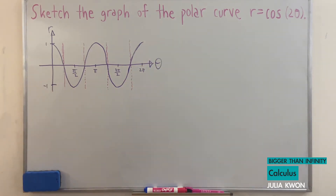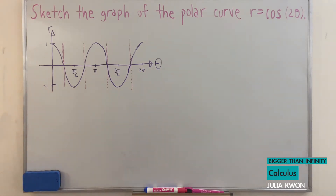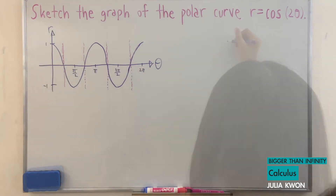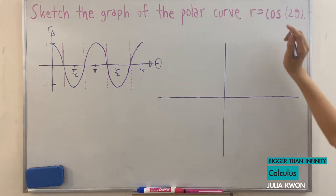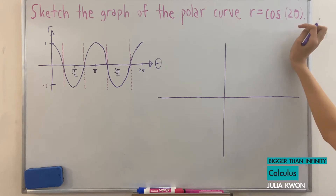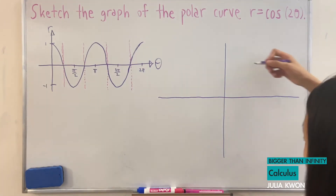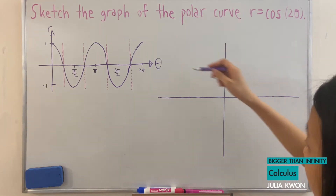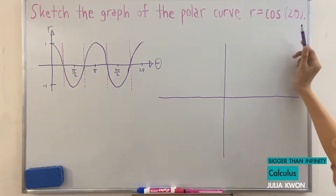Okay, I know this isn't perfect, but we have the curve — the graph of cosine 2 theta. And we're going to use this to graph the polar curve r is equal to cosine 2 theta. To graph this polar curve, you should already know the basics. Our largest radius will be one.